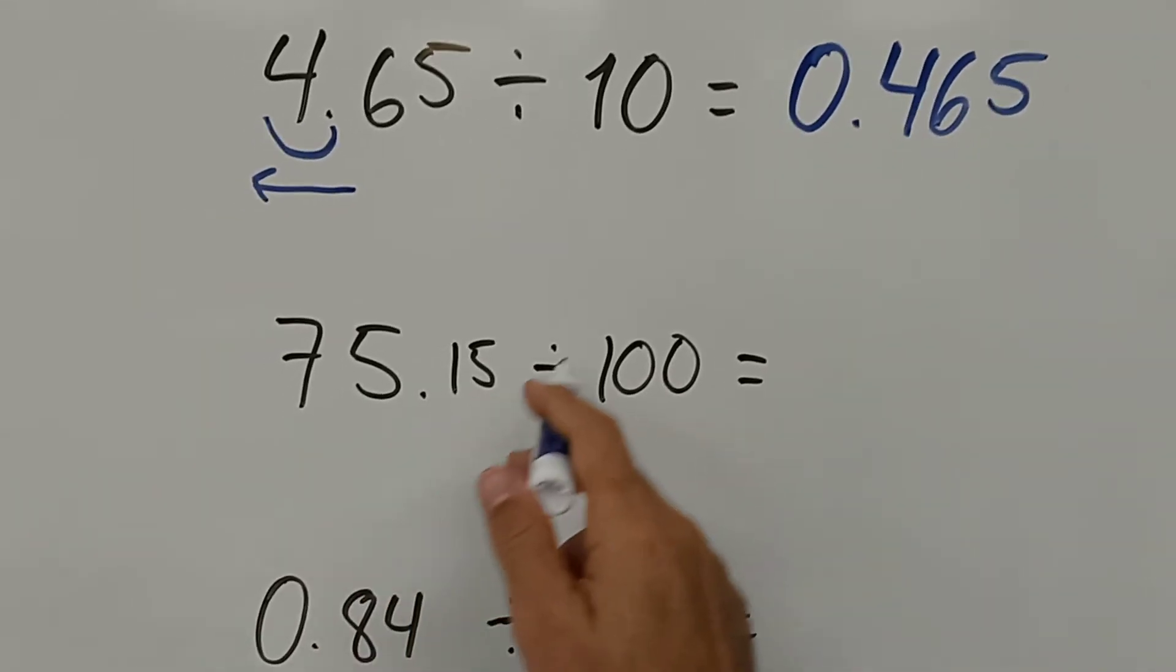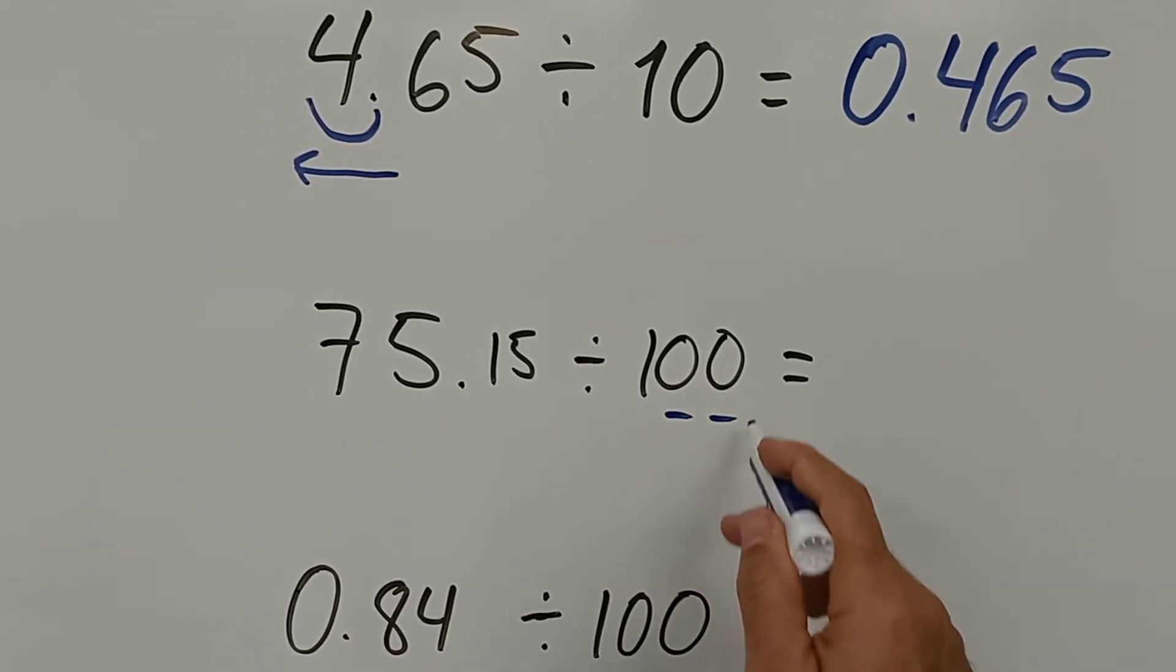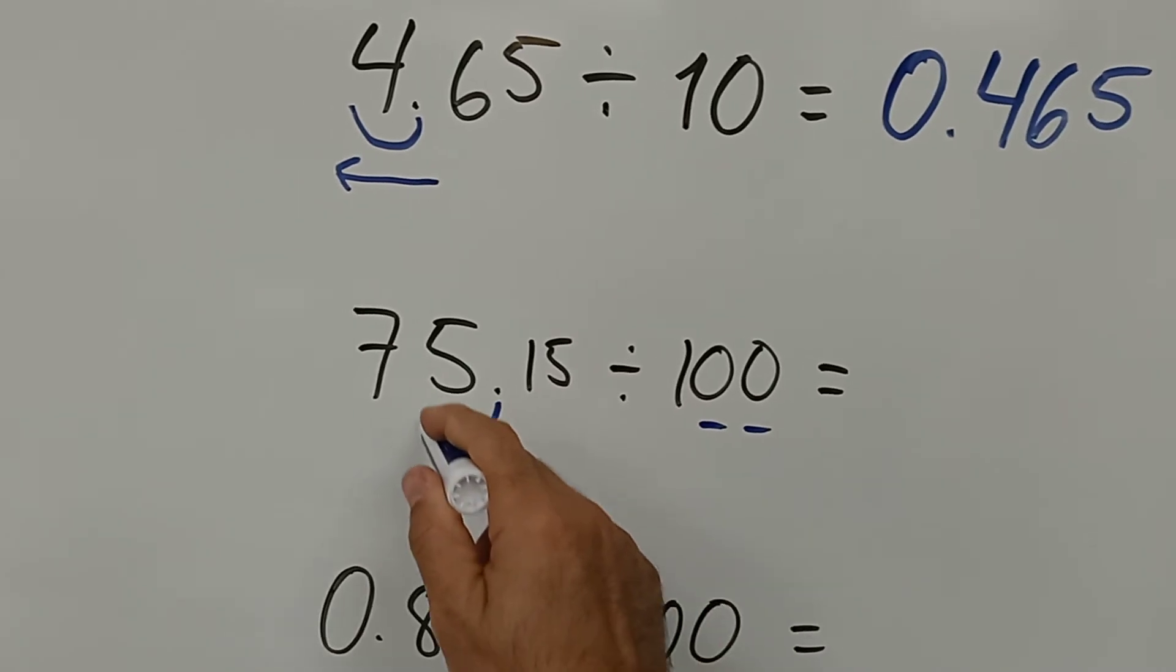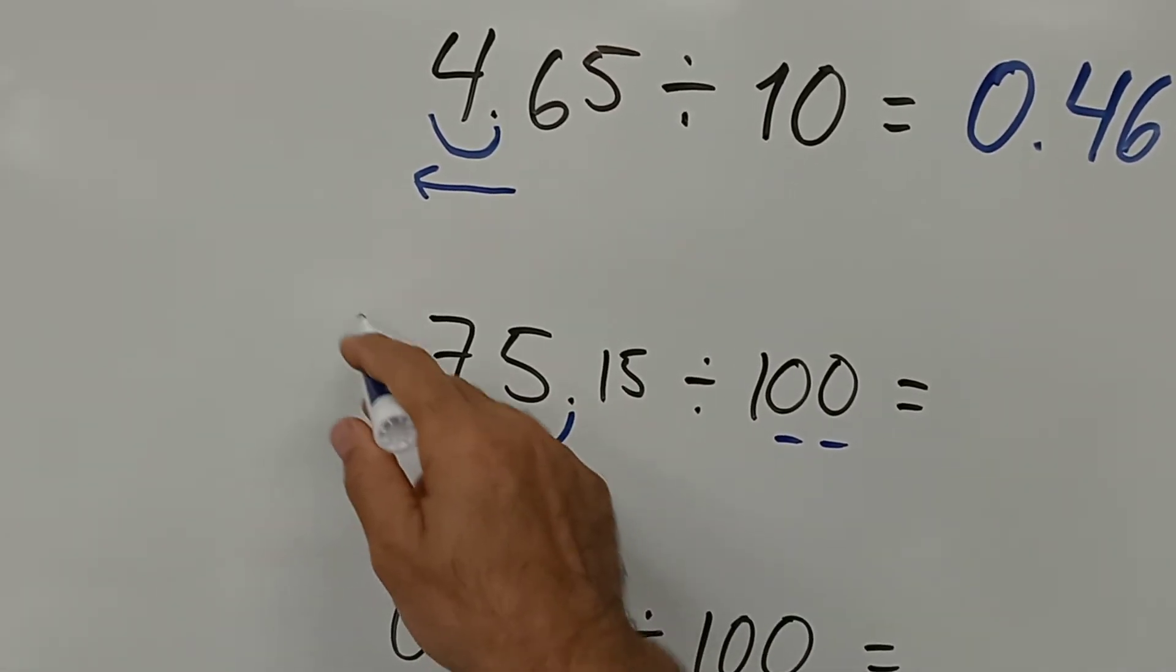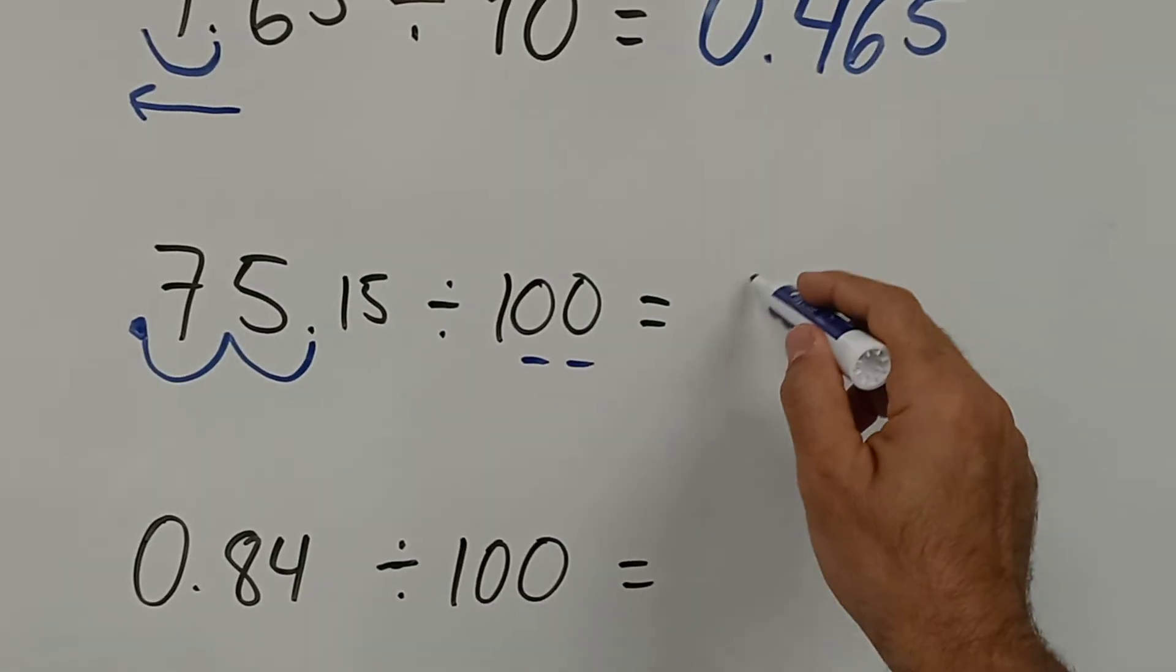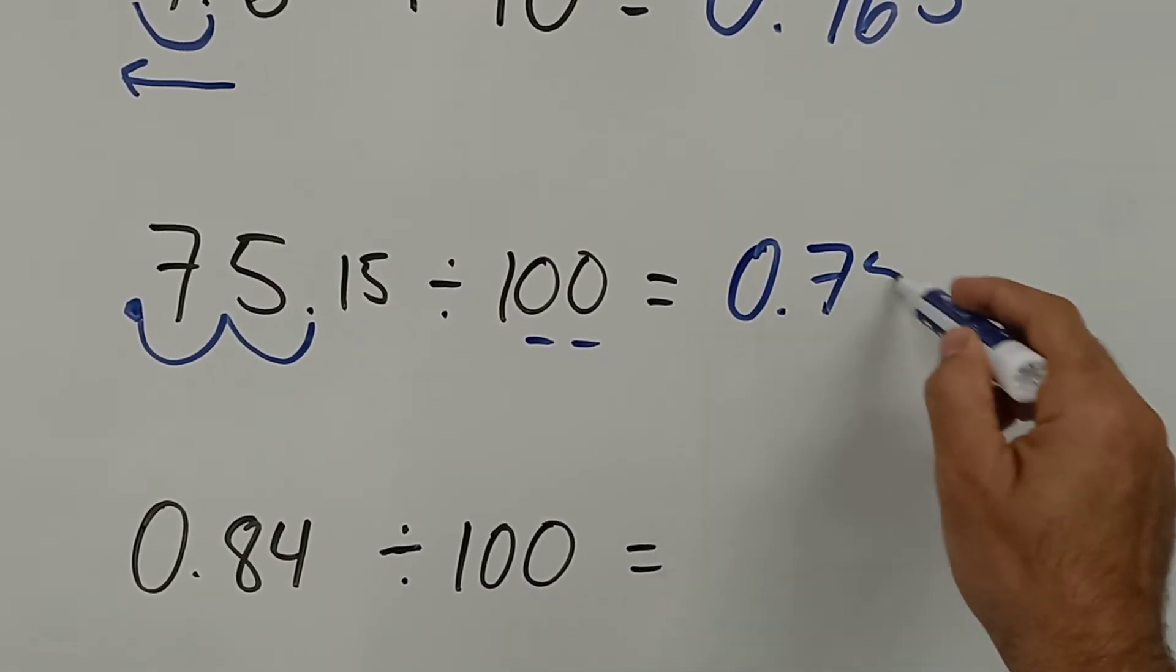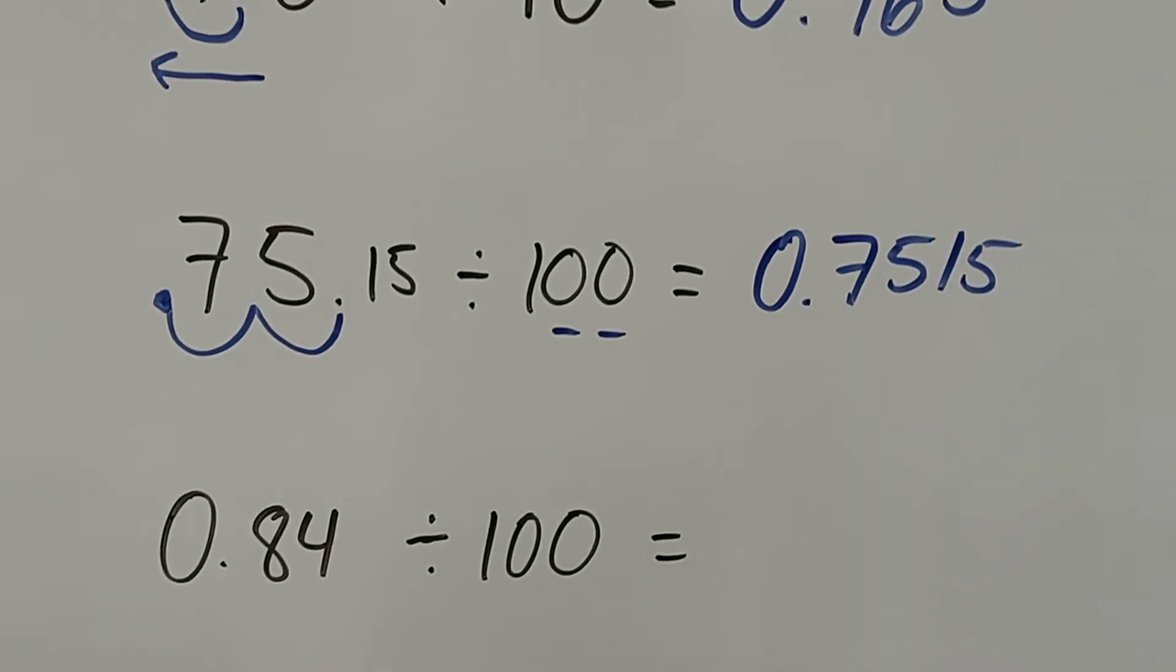Then if you have 75.15 divided by 100, it has two zeros, so you move the decimal point one, two. It becomes from here to here. If there is nothing here, you just put a zero. So the answer will be 0.7515.